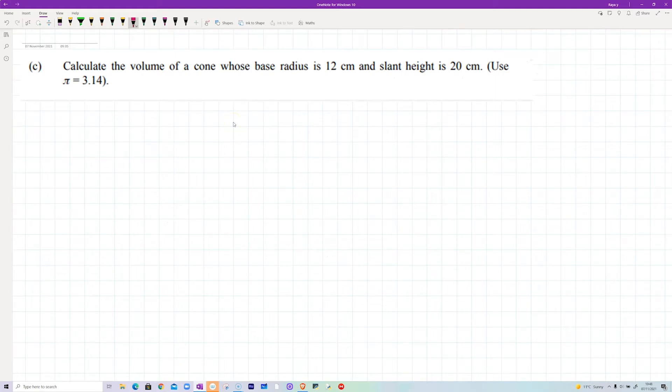Now for part C, we are asked to calculate the volume of a cone whose base radius is 12 centimeters and slant height is 20 centimeters, and we're asked to use pi as 3.14. So let's just draw. Whenever you do geometry questions, just make sure you draw. Do a little sketch. It doesn't have to be a very good sketch. We are not artists, we are mathematicians. So if you have a cone, the bottom of it, the base of the cone is going to be a circle. And we're told the radius of that is 12.